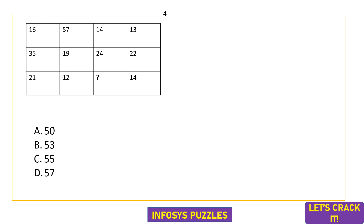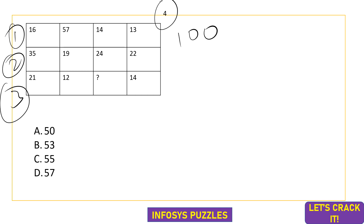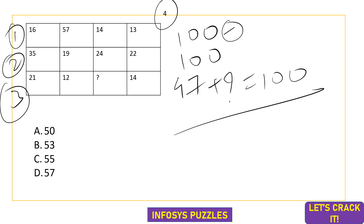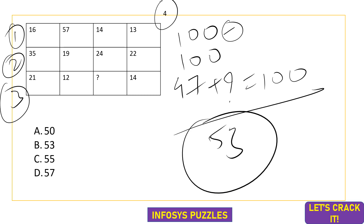Here comes the fourth question — it may not seem easy but it is very easy once you know the logic. There are three rows, and the logic is simply that the sum of all values in a row equals 100. For example: 16+57+27=100 and 73+14+13=100. So in the third row: 21+12+14 = 47, and 100−47 = 53. Option B is the correct answer.